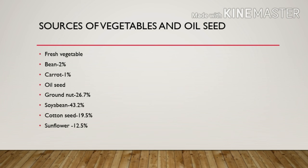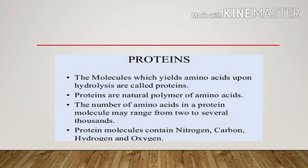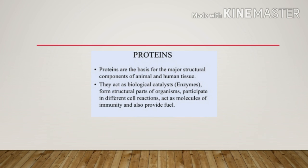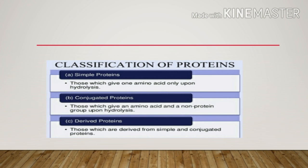The number of amino acids in a protein molecule may range from two to several thousand. Protein molecules contain nitrogen, carbon, hydrogen, and oxygen. Proteins are the basis of major structural components of animal and human tissue. They act as biological catalysts, form structural parts of organisms, participate in different cell reactions, act as molecules of immunity, and also provide fuel.